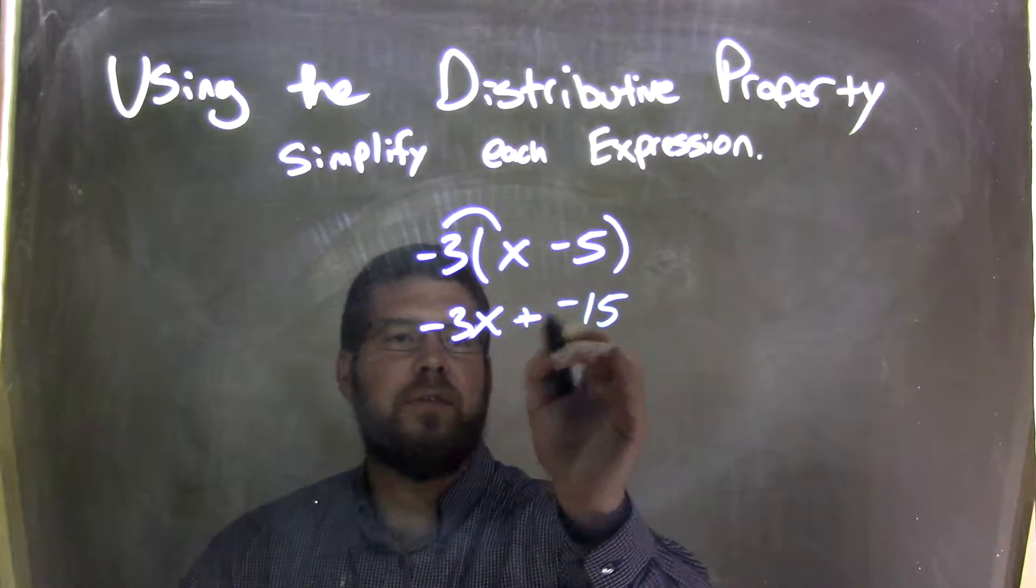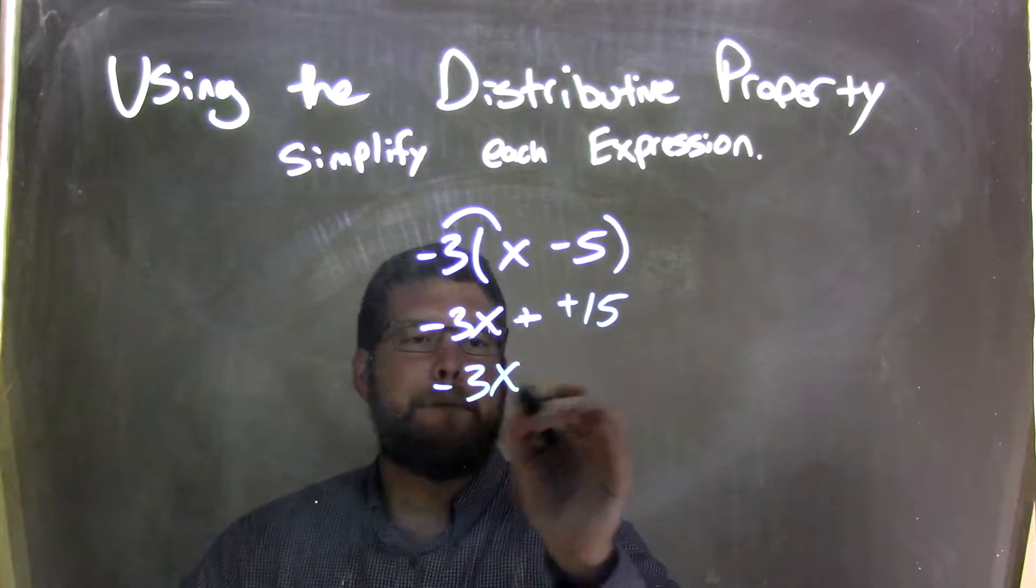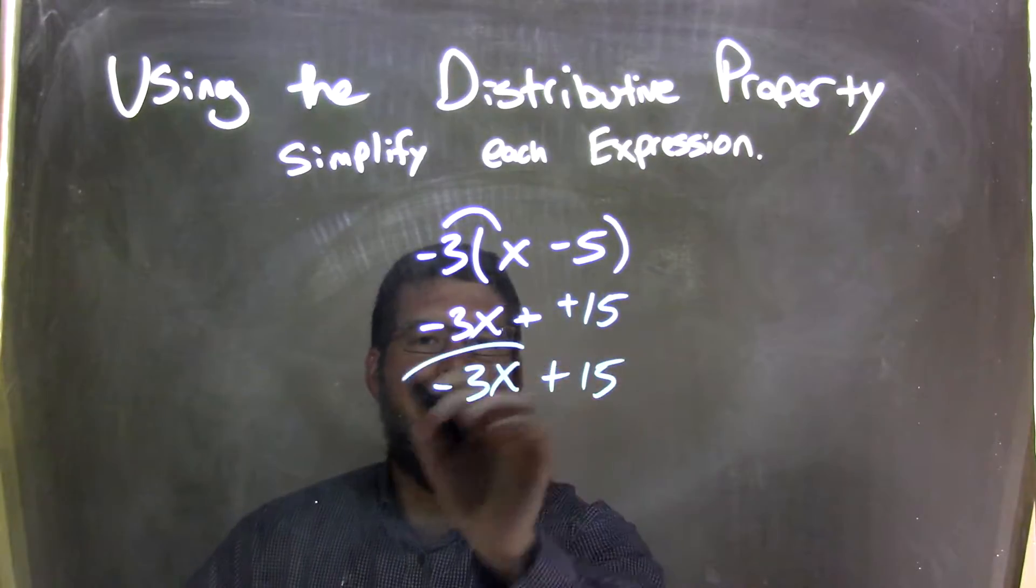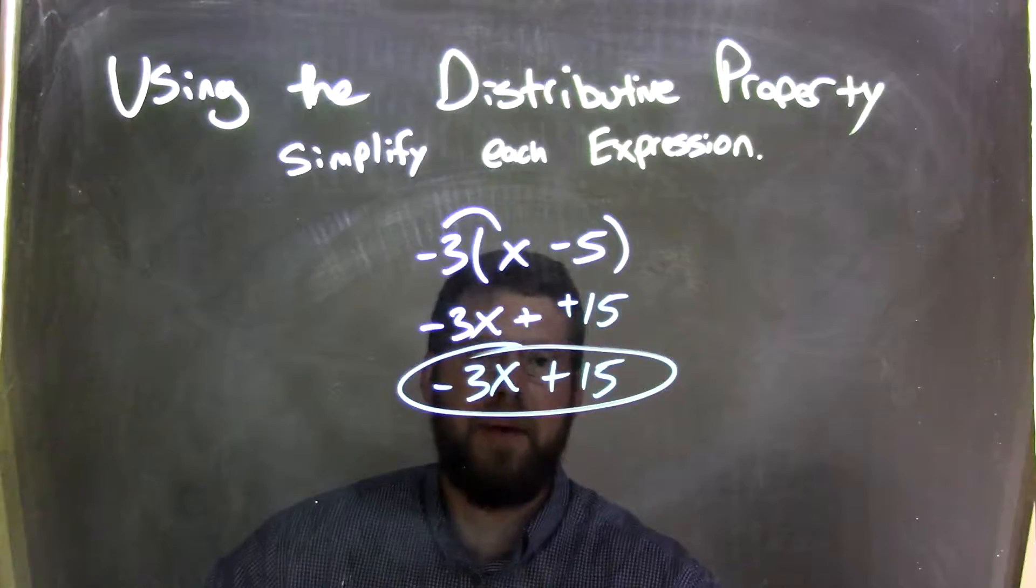So I'm going to rewrite this, adding a positive. So negative 3x plus 15, and that is our final answer. These are not like terms, we cannot combine them.